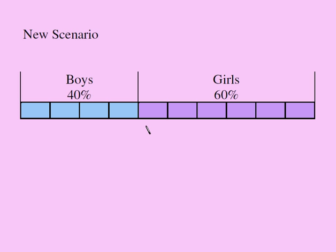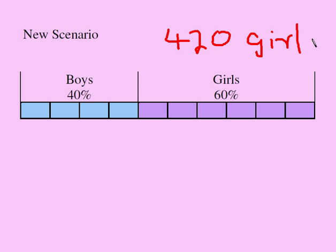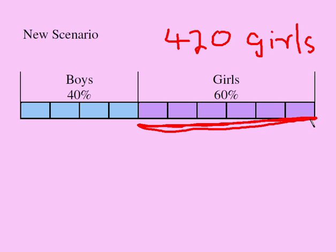From the previous scenario, I had 420 girls. I still have 420 girls in this new scenario — that tells me the girls' portion of the strip is still 420. If this whole strip's girl section is 420, we need to find how many girls belong to each little piece.